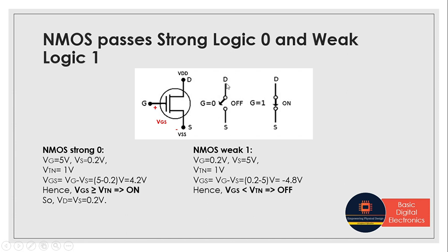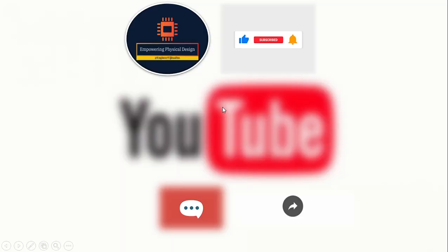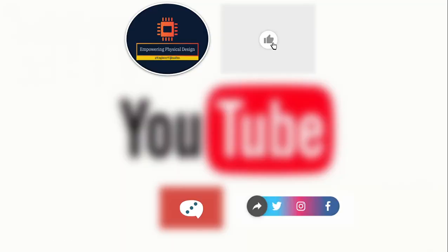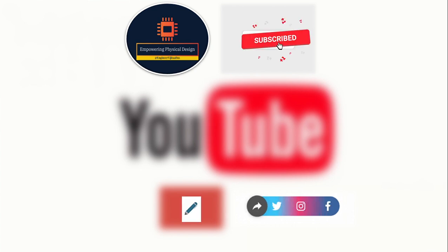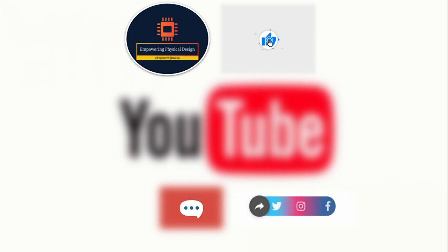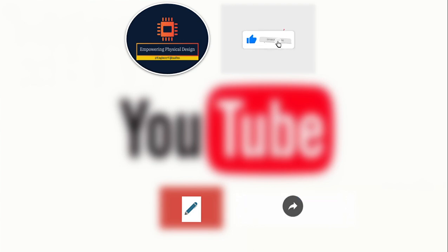Even though there was a high value at the source terminal, it was not able to pass directly to the drain terminal. That's why NMOS passes weak logic 1 — we already have a high value at source but cannot pass it to drain. Hence proved. Thanks for watching. If you like this information, please hit the like button, subscribe to my channel, press the bell button, comment your feedback below, and share it with your friends, colleagues, and VLSI aspirants. Thank you.